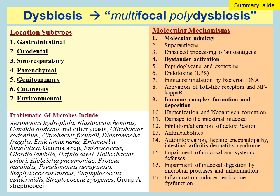Certain antimetabolites can be formed, such as D-lactic acid. Autointoxication, hepatic encephalopathy, and intestinal arthritis-dermatitis syndrome are all names for the same condition — bacterial overgrowth of the small bowel. Some patients become more sensitive to that once their physiology has been altered. Candida albicans produces a mycotoxin that suppresses immune function and also an IgA protease that degrades IgA on mucosal surfaces, resulting in the accumulation and persistence of microbial infections. Finally, inflammation-induced endocrine dysfunction also plays a role, though the research on that is less solid than for the previously mentioned molecular mechanisms.